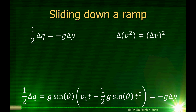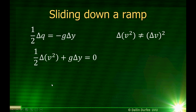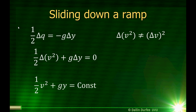Here's the thing we need to be careful of: the change in velocity squared is not the same as the change in velocity, squared. So we're looking to see how velocity squared changes, not how velocity changes and then square that. Delta q is the change in velocity squared. Looking at this equation and taking the g delta y to the other side, we're left with one-half change in velocity squared plus g times change in y equals zero. So as we go from the top of the ramp to the bottom, these two things added together don't change.